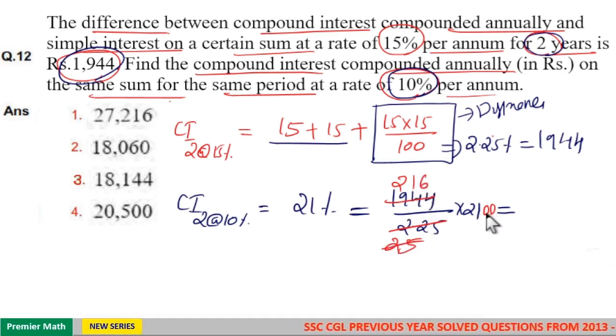Now 25 goes 4 times in 100, which means 21 into 4 is 84. Now 216 into 84, 6 into 4 is 24, unit digit is 4. Unit digit is 4 means here unit digit is 4, and option 3, so option 3 is your answer.